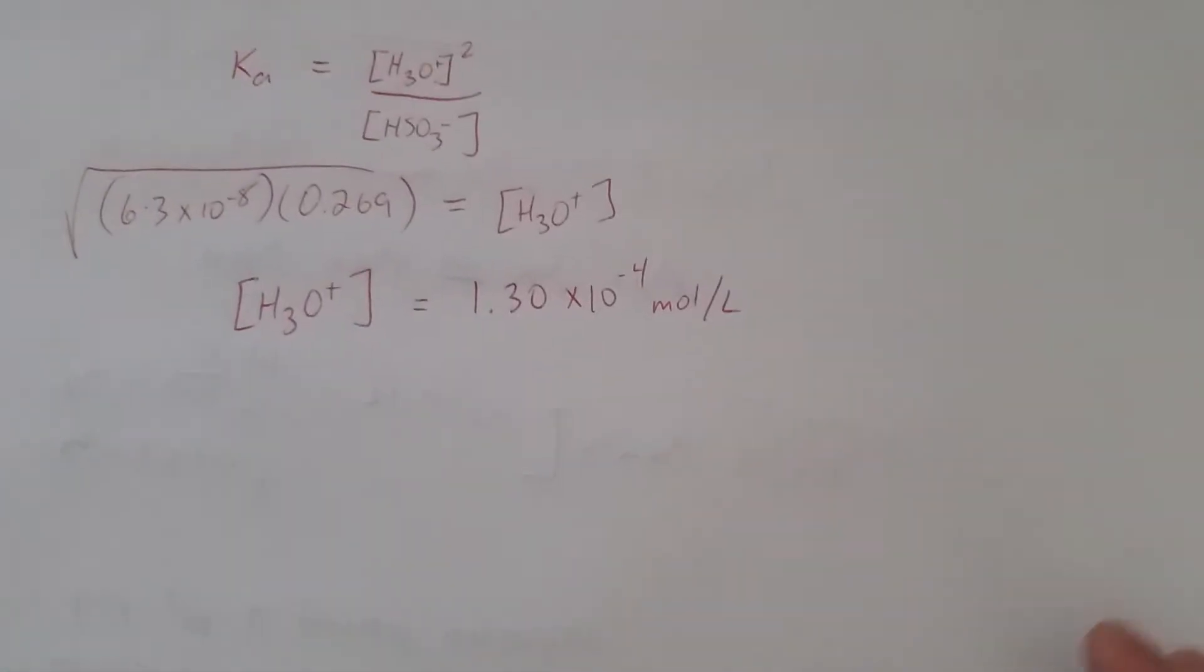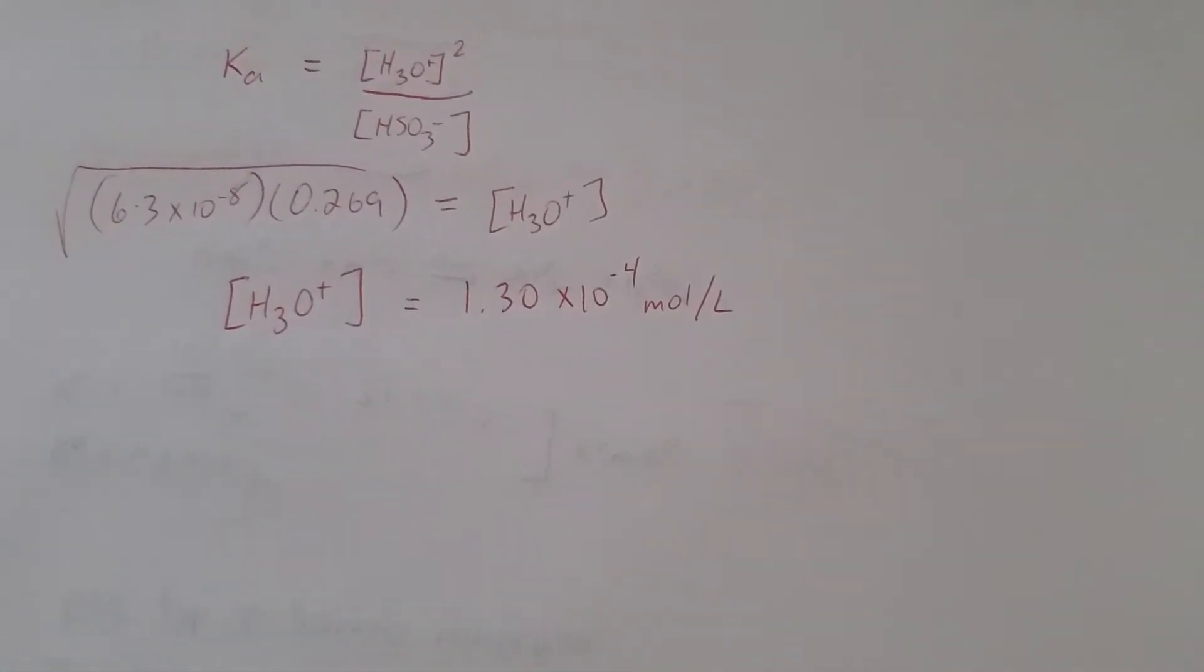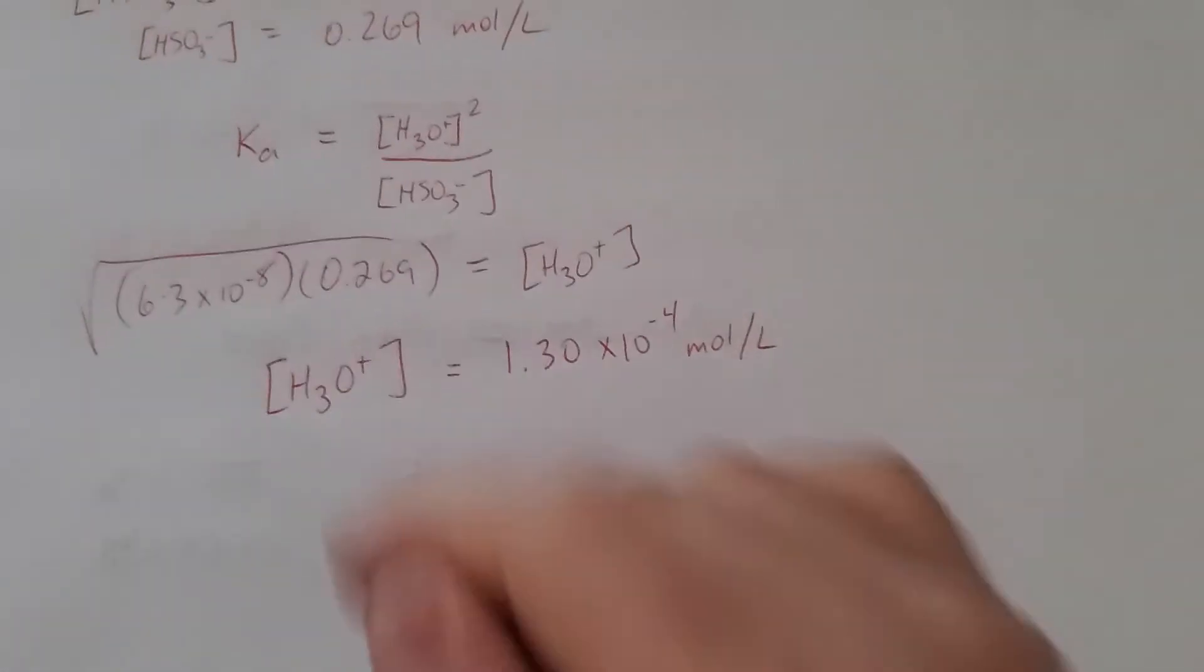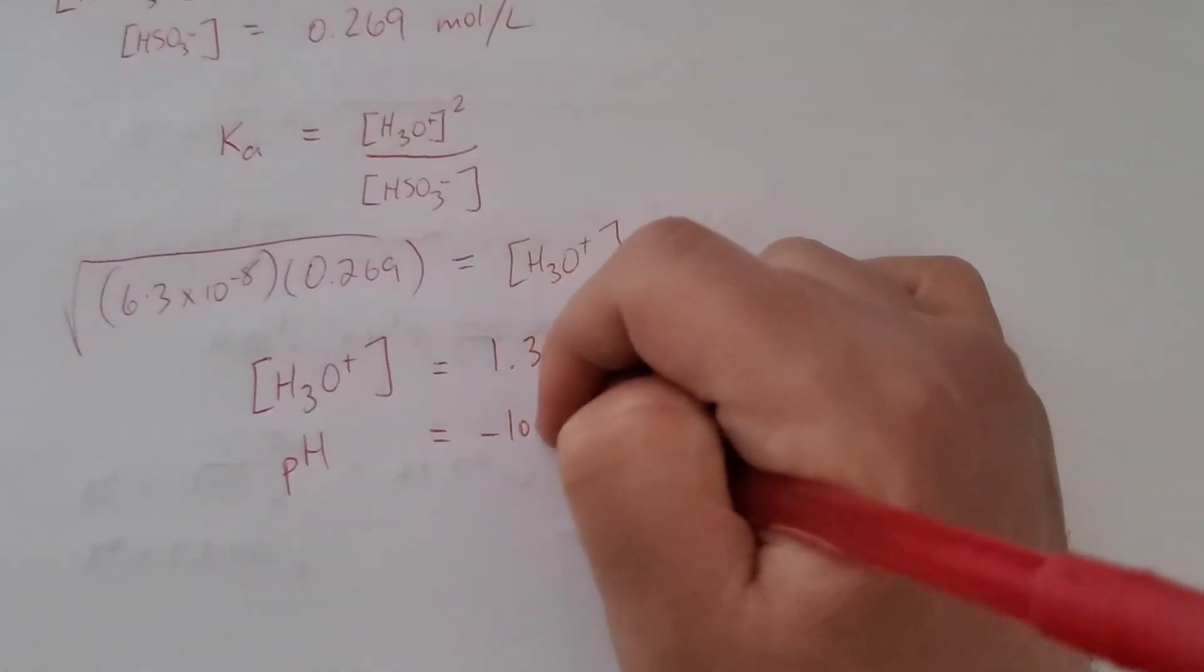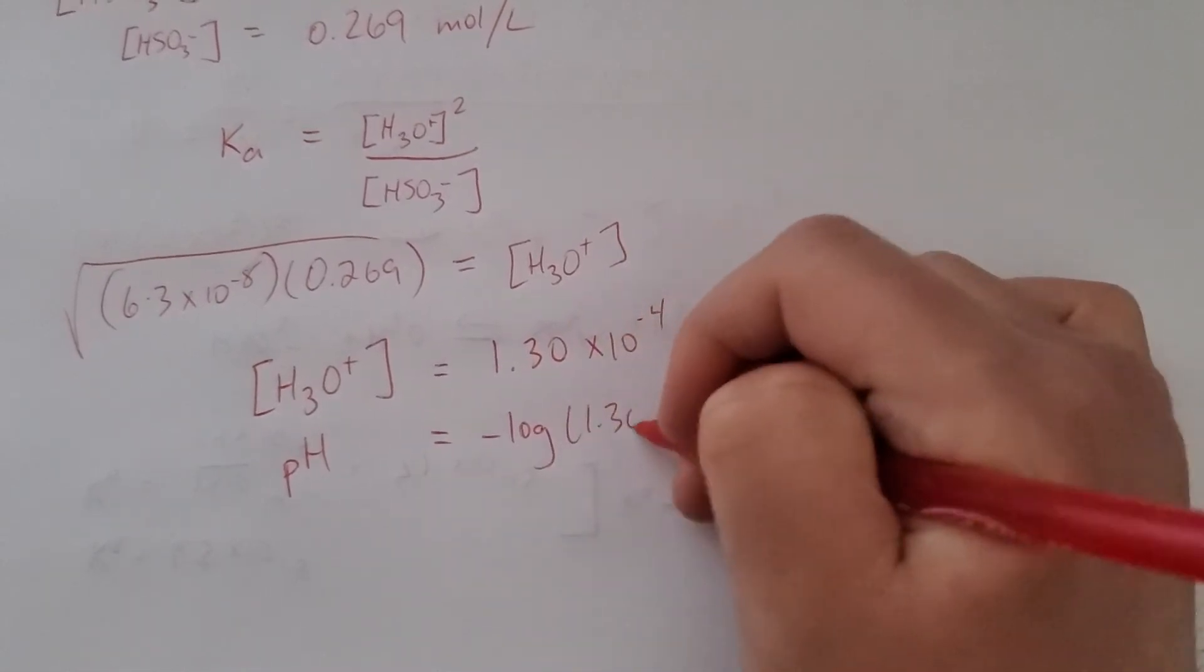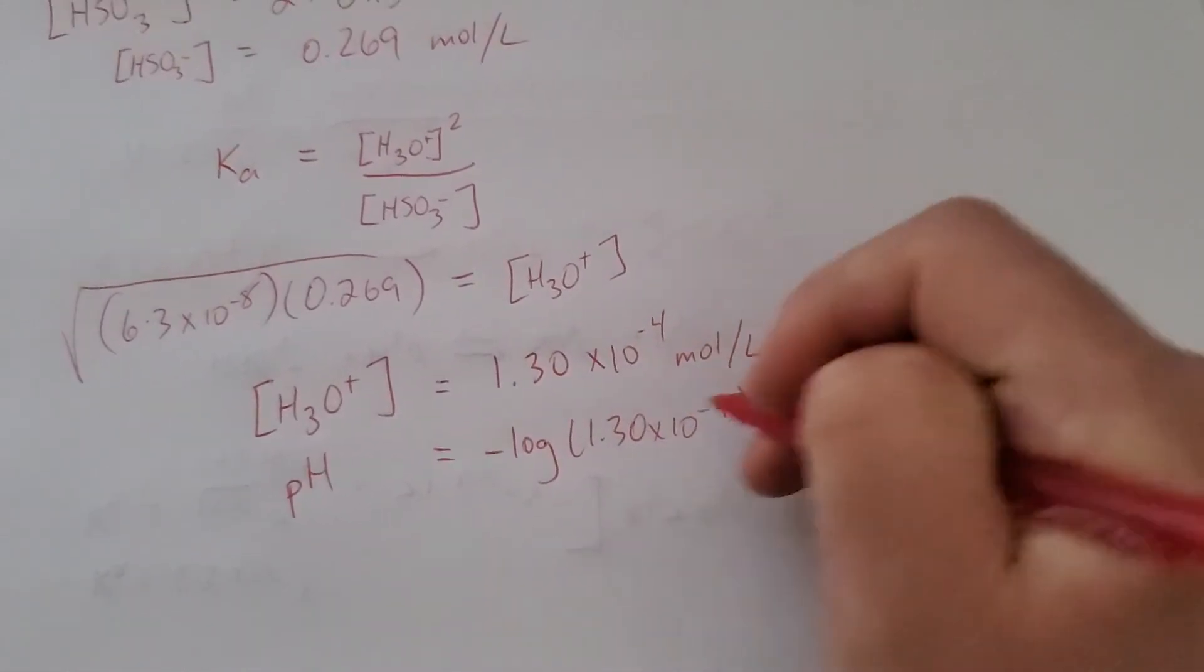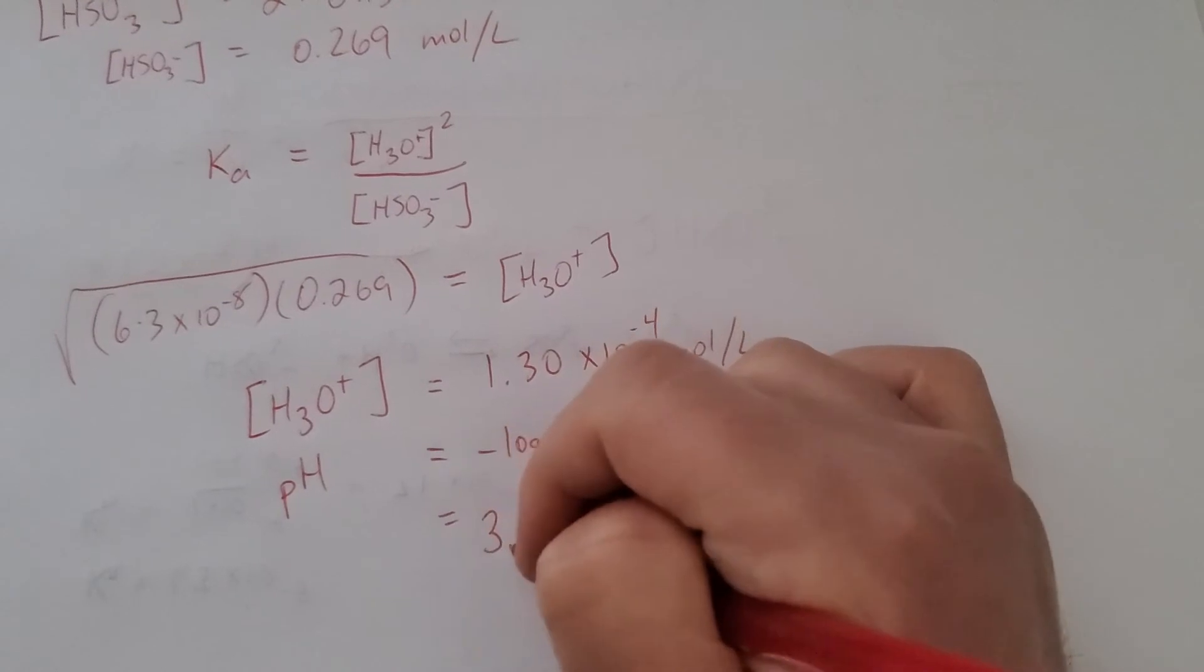Once we have that, getting the percent ionization and the pH is really easy. I'll just do the pH real quick here. It's negative log. When I do that, I get a pH of 3.9.